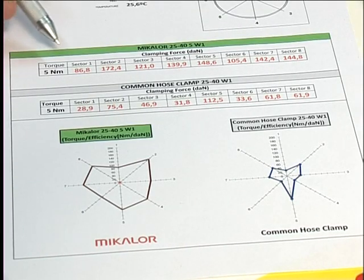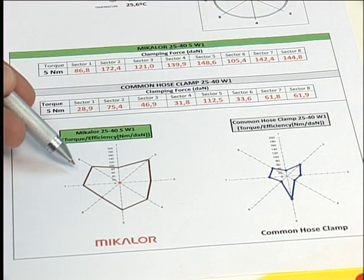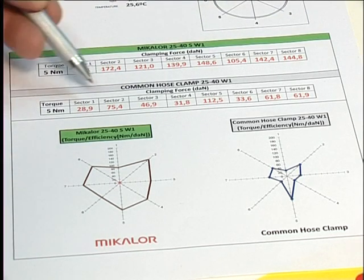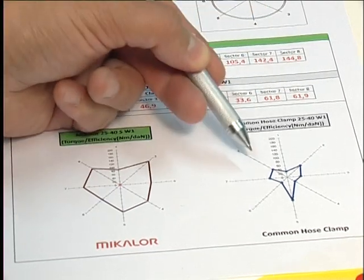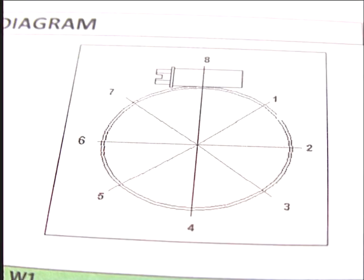In the foreground you can observe the values reached by the Mikalor clamp in each of the eight sectors and the corresponding polar diagram. In the background you can see values reached by the standard clip and the corresponding polar diagram.